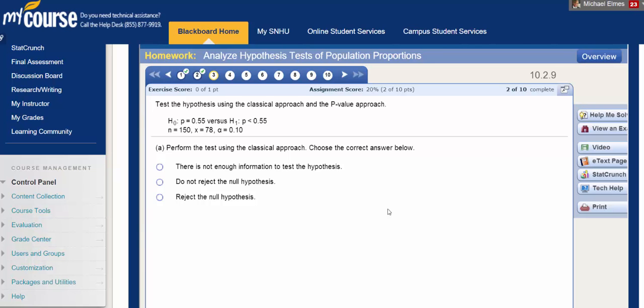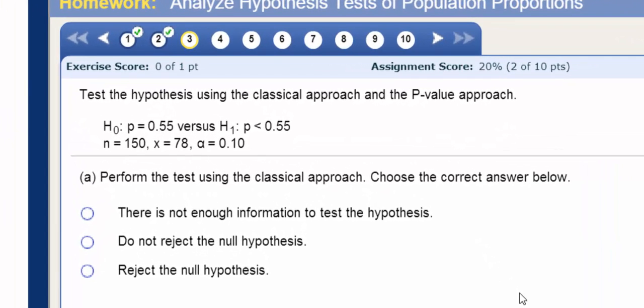In this video, we want to test the hypothesis using the classical approach and the p-value approach. We're first asked to use the classical approach. Using the classical approach, we're going to need to find a test statistic and a critical value, and we're going to need to compare those two numbers.